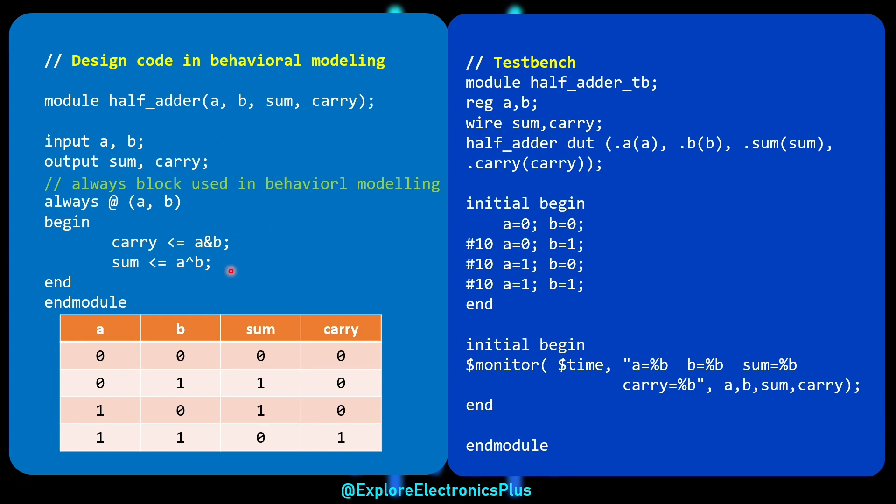In the behavioral modeling also we can use the expressions, but we need to put under always block. Here you can see always block is used. This always block will be having a sensitivity list. Always at the rate, sensitive to A comma B, means this logic what we written in always block, these expressions will be sensitive to change in A, B.